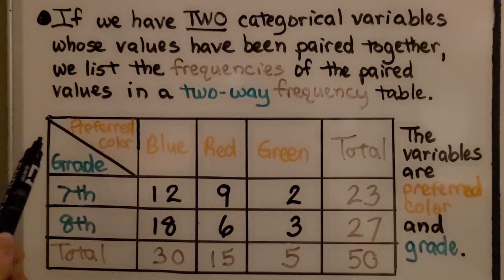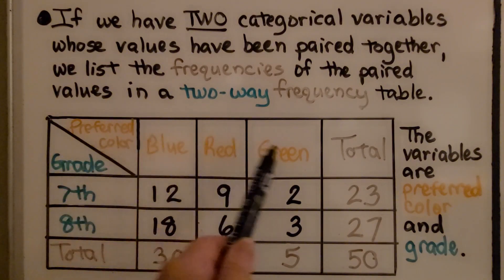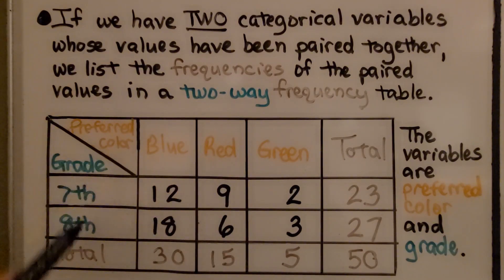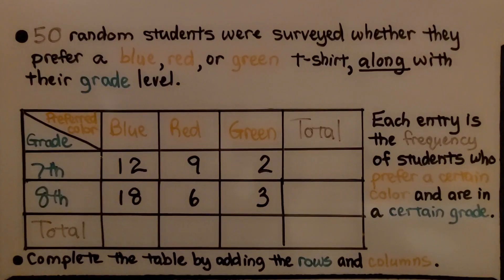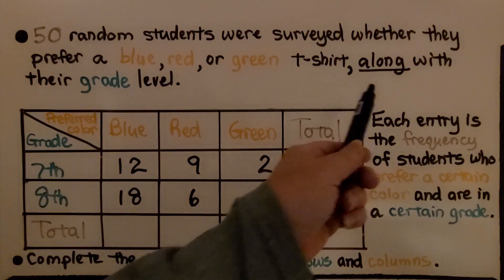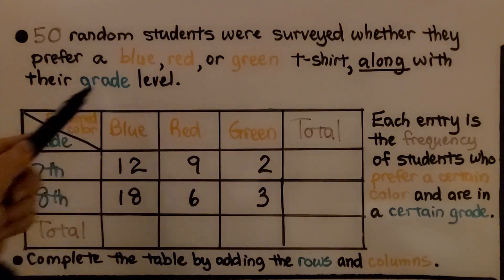So now we have the preferred colors and the grade of those who preferred those colors. The variables are the preferred color and grade. We have 50 random students that were surveyed on whether they prefer a blue, red, or green t-shirt, but now we have it along with their grade level.